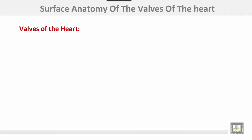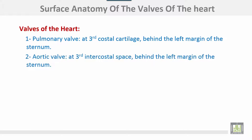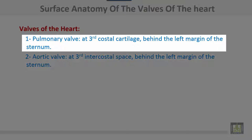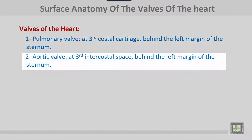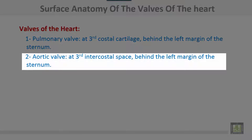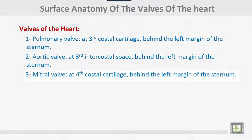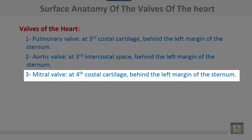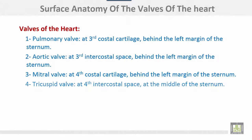Surface anatomy of the valves of the heart. Number one: the pulmonary valve is at the third costal cartilage behind the left margin of the sternum. The aortic valve is at the third intercostal space behind the left margin of the sternum. The mitral valve is at the fourth costal cartilage behind the left margin of the sternum. The tricuspid valve is at the fourth intercostal space at the middle of the sternum.